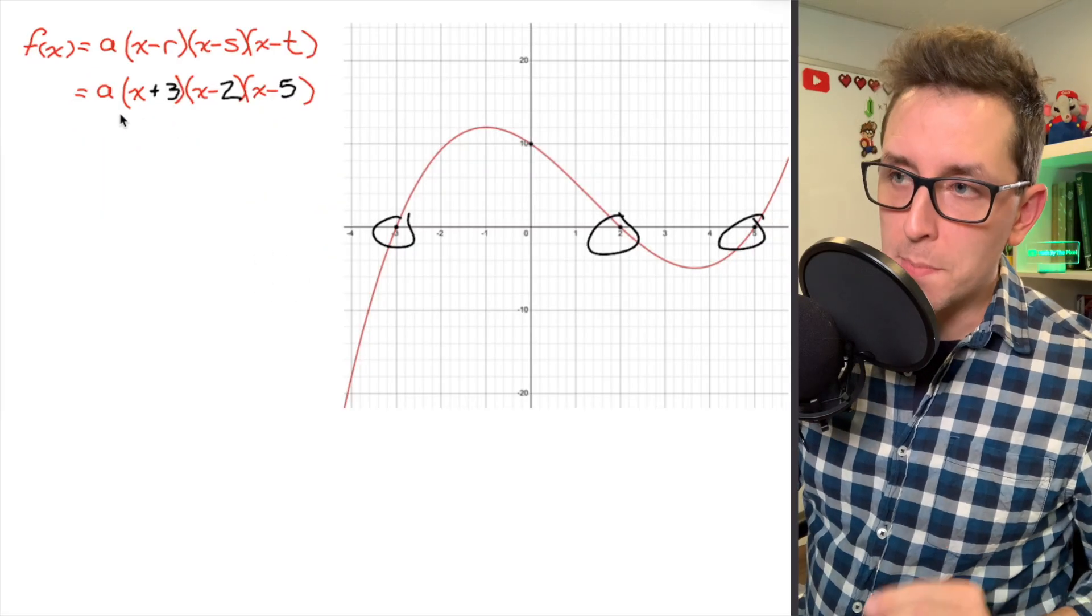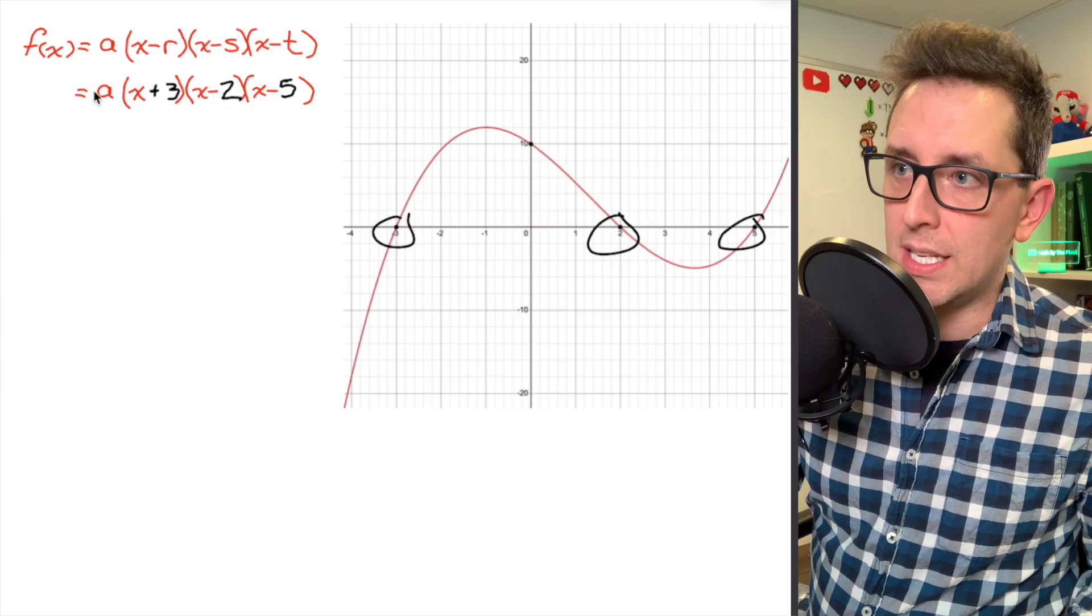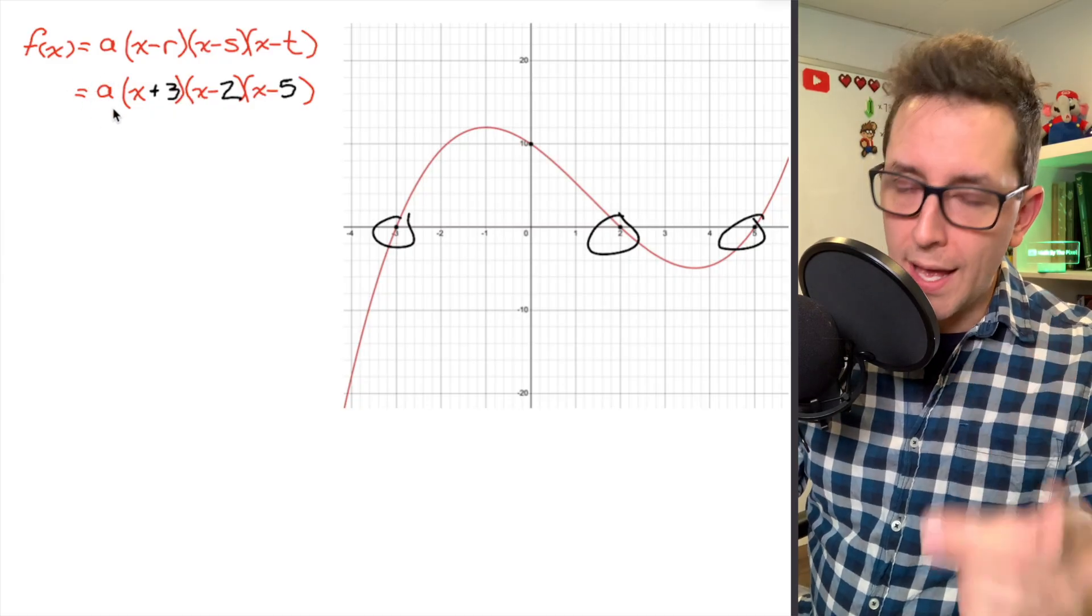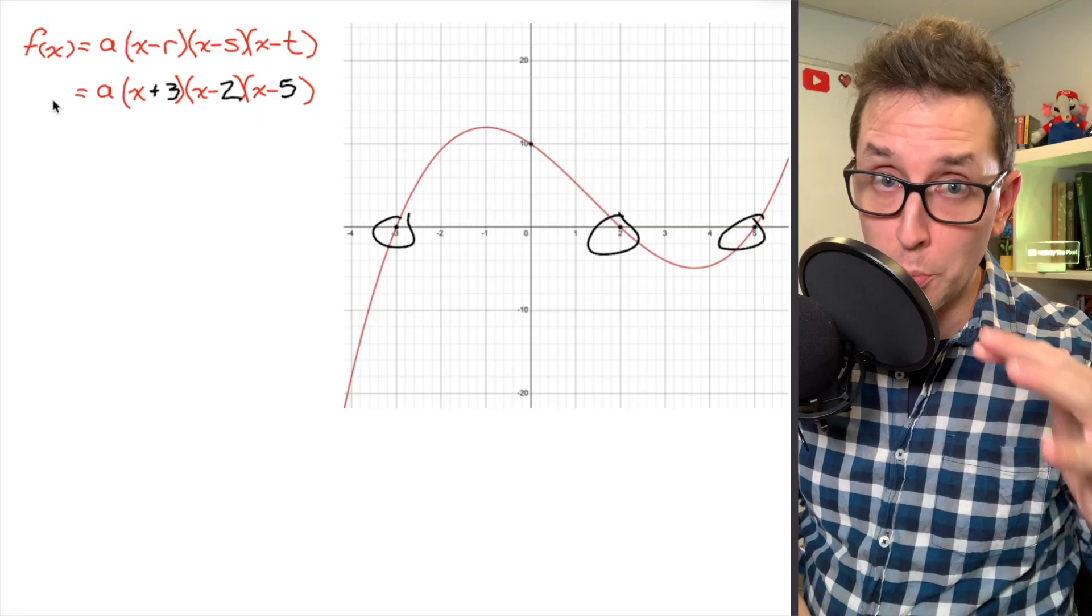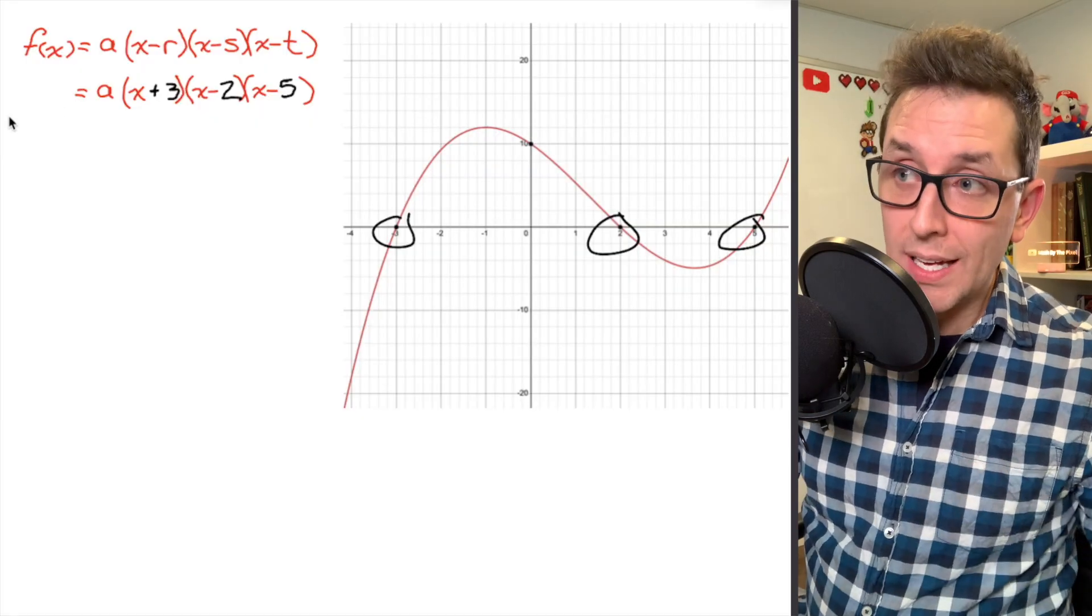The only thing that's missing is I've got this pesky value of a here. That value of a is really important, because that's going to tell us how much our graph has been stretched or compressed in the y direction. If I neglected to write that a, I would assume that there's a value of 1 here, and the equation would not match the graph that I've got here.